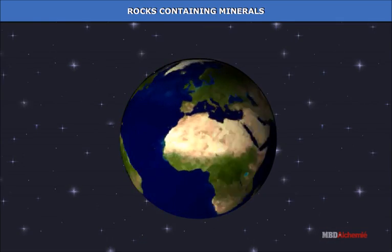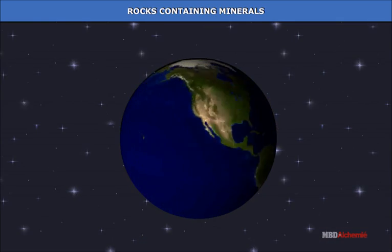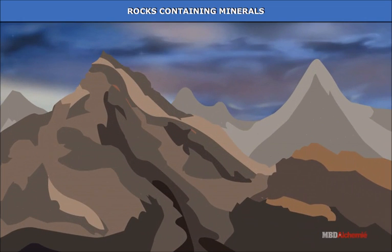Rocks containing minerals. The compacted substances that comprise the earth's crust are called rocks. In geological terms, rocks are the naturally formed aggregate of mineral particles. It is the minerals that impart their texture, color, shape, and hardness or softness to rocks.